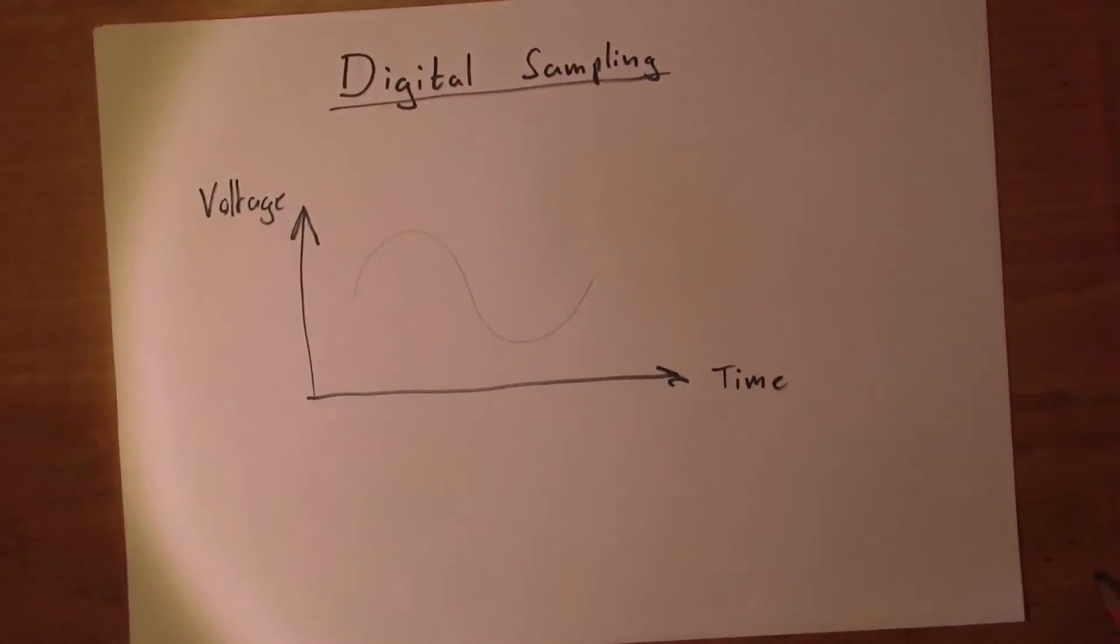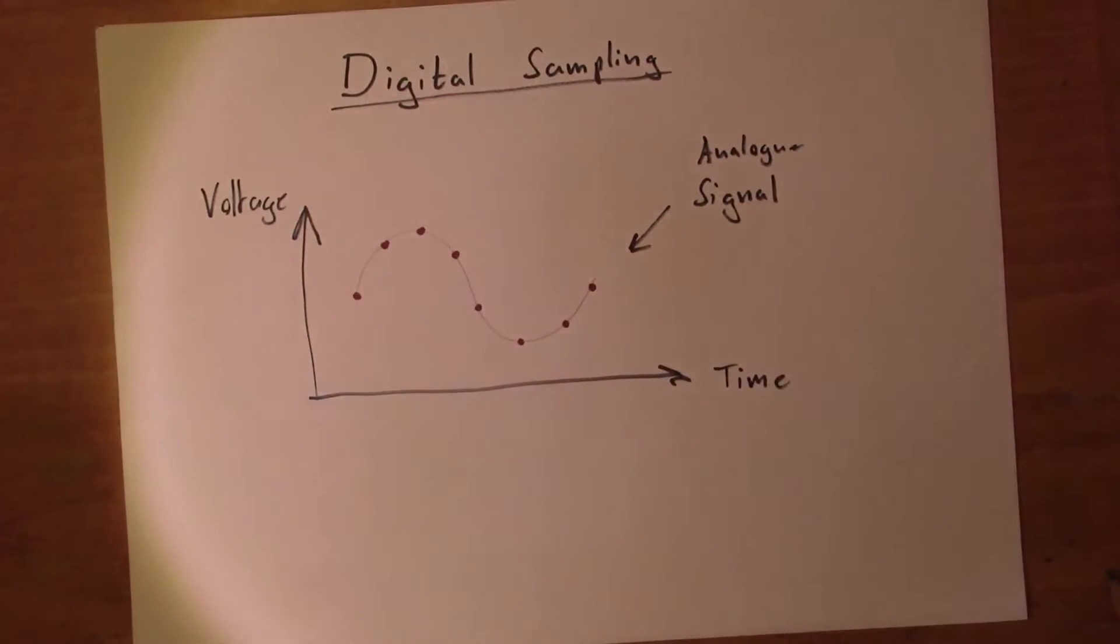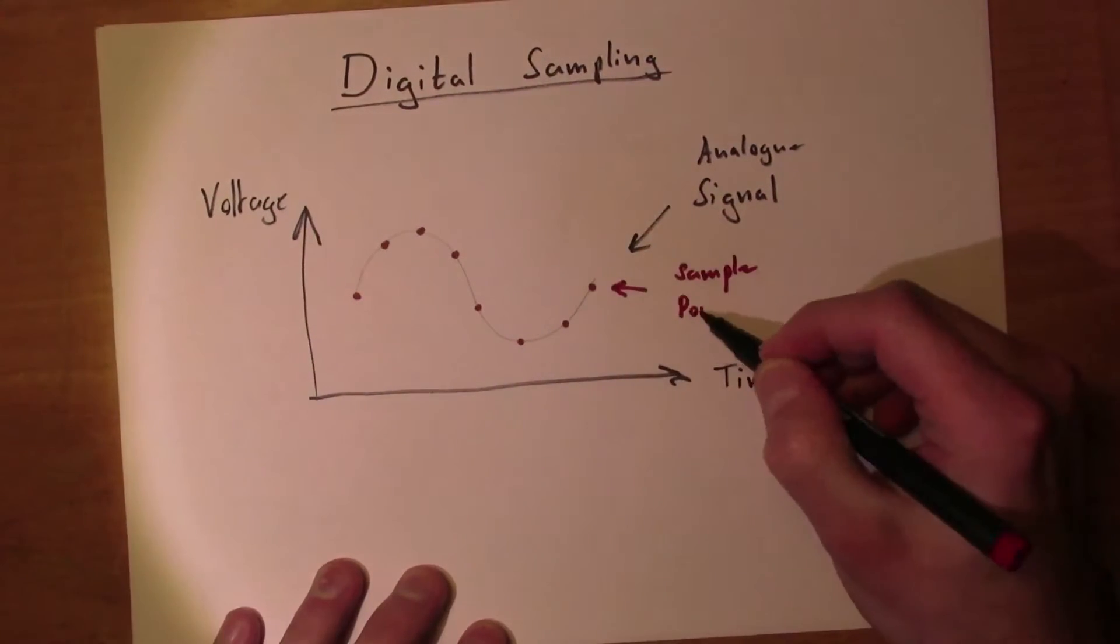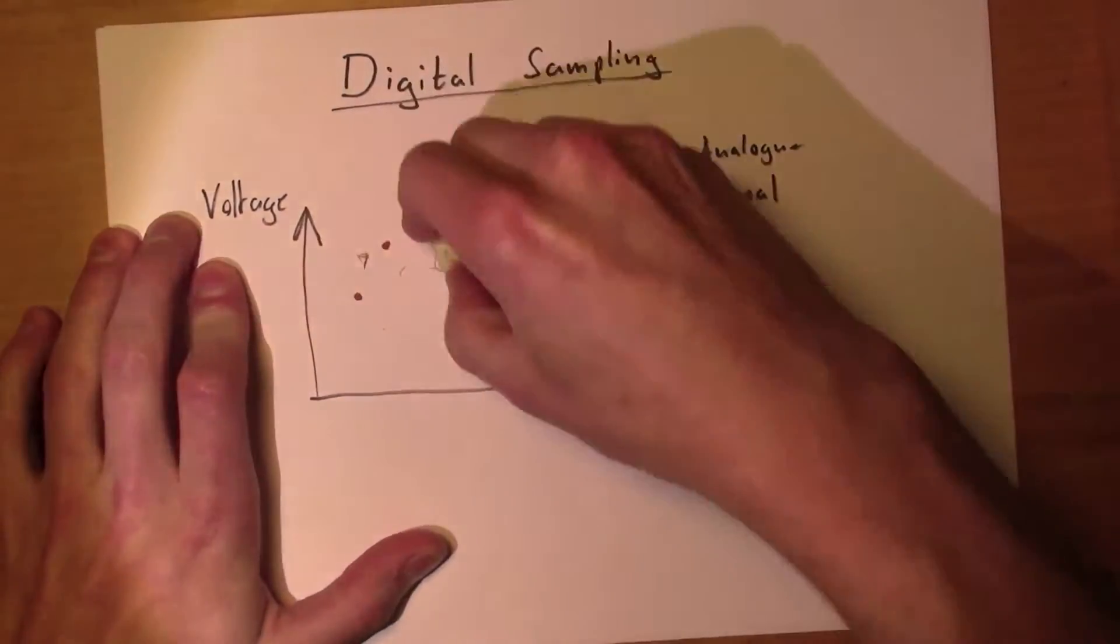The drawing with the pencil represents the signal that you want to sample. The red dots represent the sample points, which are the points of the analog signal that the analog-to-digital converter registers and saves.